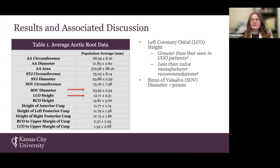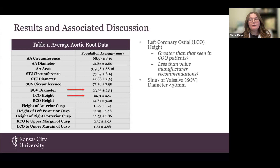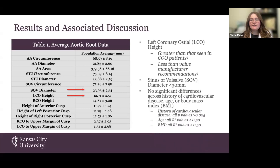Now let's look at our sinus of Valsalva diameter. In that same multicenter registry study by Ribeiro et al., they concluded that a sinus of Valsalva diameter of less than 30 millimeters puts a patient at risk for COO. Therefore, based on our data, we can conclude that most of these patients would be considered at risk for COO if they underwent a TAVR procedure. We found no statistically significant differences when comparing our data across age, BMI, or history of cardiovascular disease.